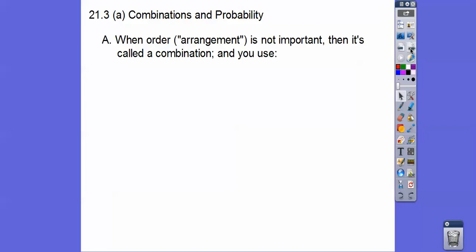When order or arrangement is not important, it's called a combination and you use nCr. The last one we did nPr. It's very familiar, you guys, except nCr has the additional r factorial. nPr is just n factorial over n minus r factorial, but nCr is n factorial over r factorial times n minus r factorial.